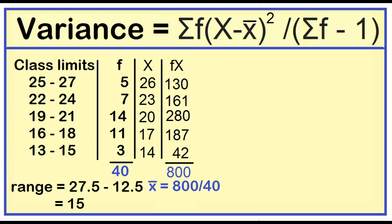The sample mean is 800 divided by 40, which is 20. Let's add a column for the sample mean so we can easily subtract it from the class mark.